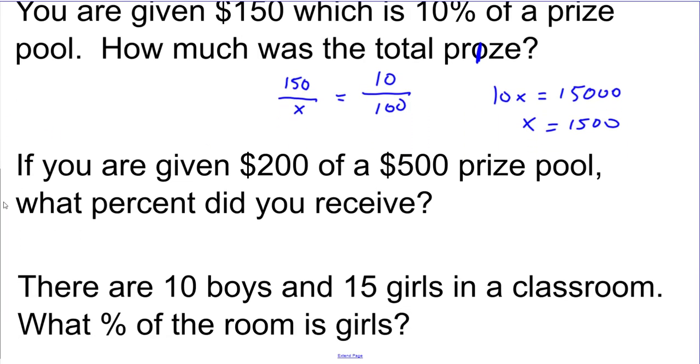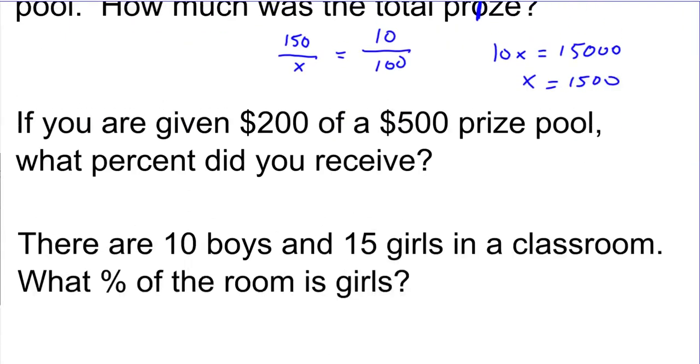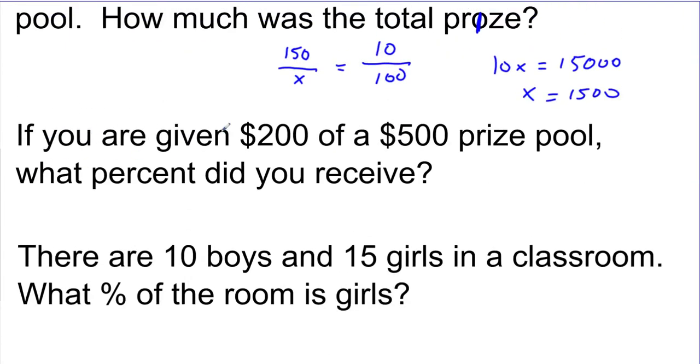So any of the rest of these problems are going to be a very similar type of problem. So it says if you're given $200 of a $500 prize pool, what percent? So they're kind of saying I don't know the percent out of 100. Of $500, so that's going to go on the bottom. And 200 is the part of the whole.